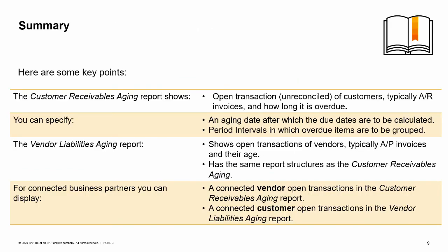Here are some key points to take away. The customer receivables aging report shows open unreconciled transactions of customers, typically AR invoices, and how long they are overdue. You can specify an aging date and period intervals for grouping overdue items. The vendor liabilities aging report shows open transactions of vendors, typically AP invoices, and has the same report structure. For connected business partners, you can display a connected vendor's open transactions in the customer receivables aging, and a connected customer's open transactions in the vendor liabilities aging.